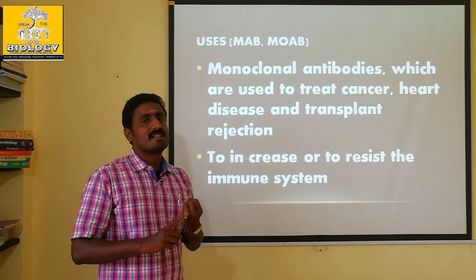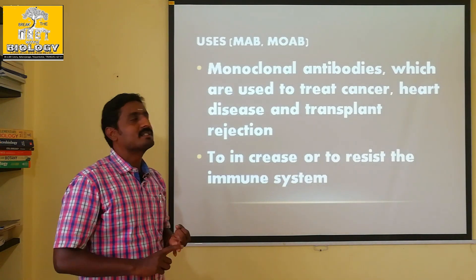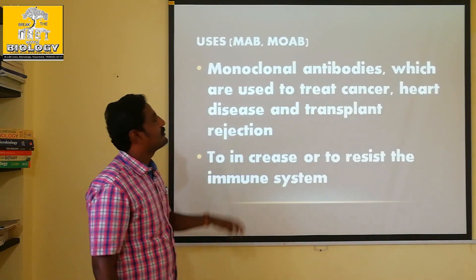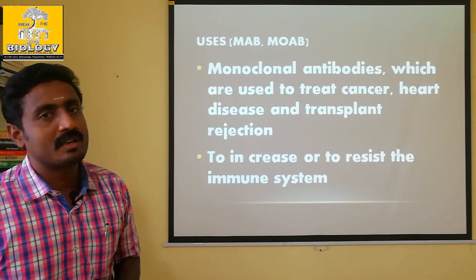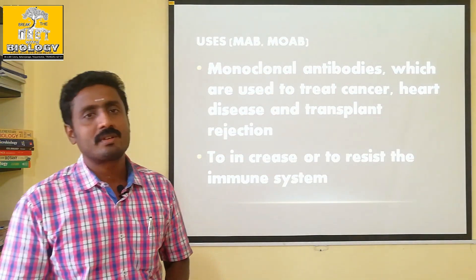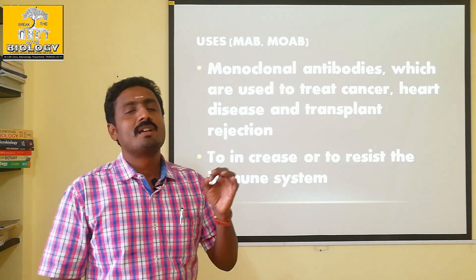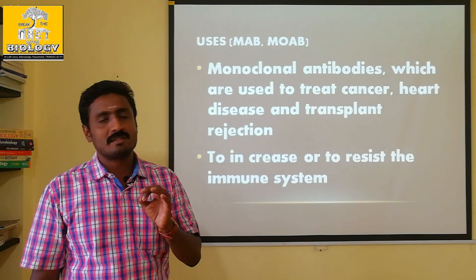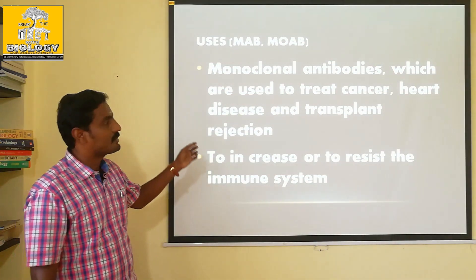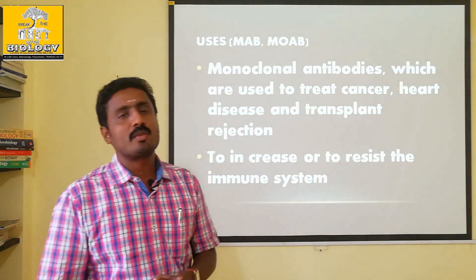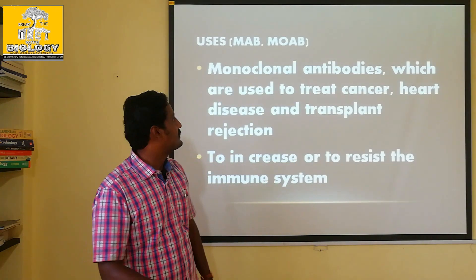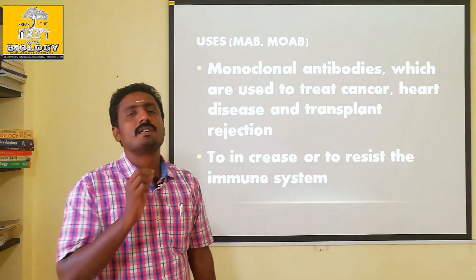Monoclonal antibodies are used against cancer cells, heart disease, and transplant rejection. They can target the immune system in two different ways. Monoclonal antibodies are used to treat cancer, treat heart disease, and work against transplant rejection.